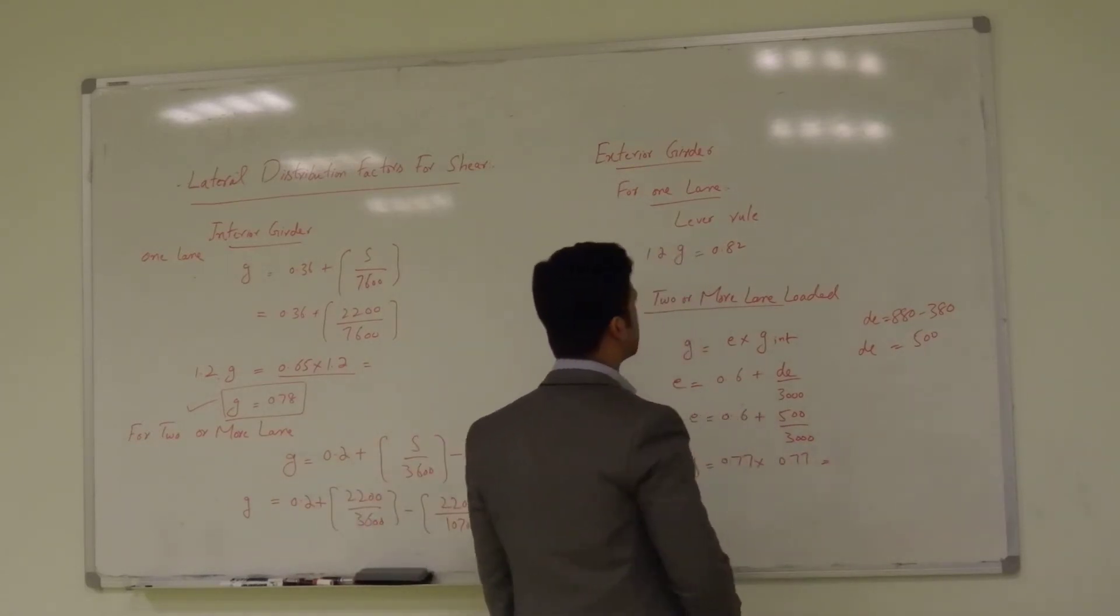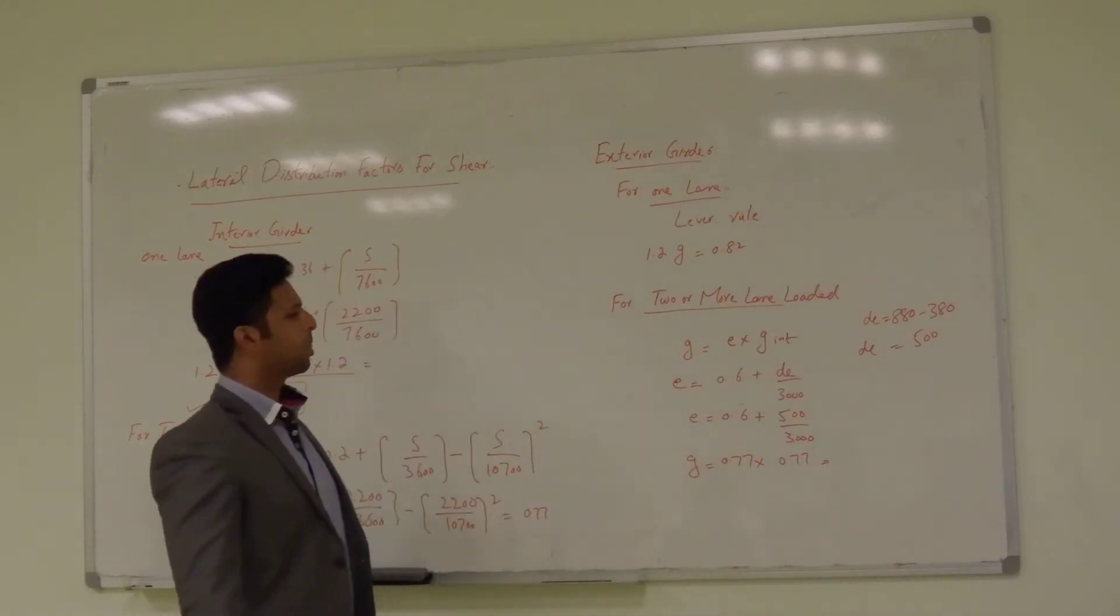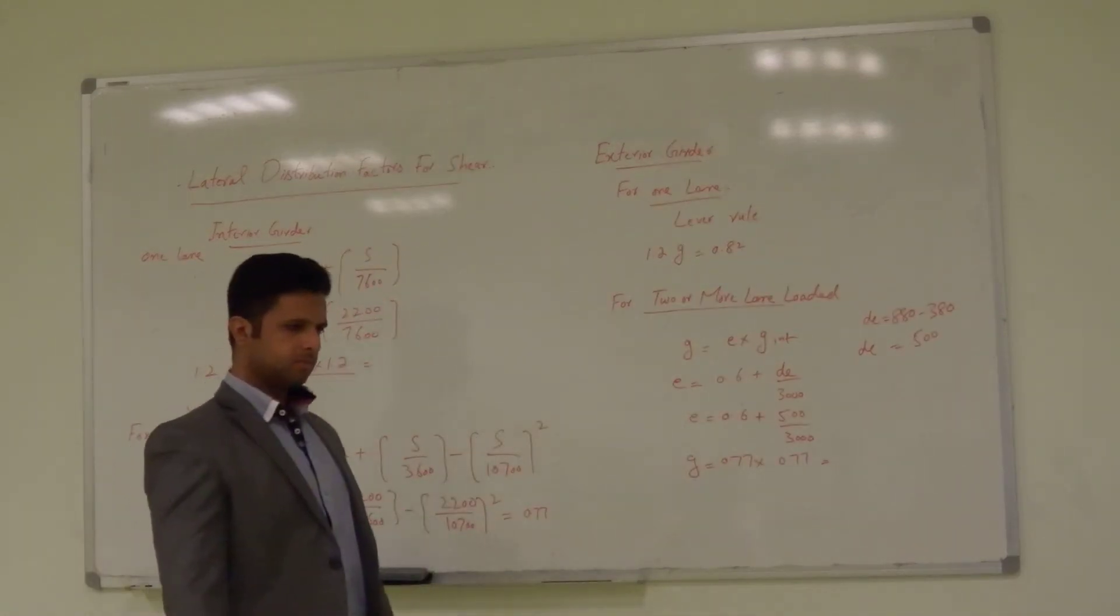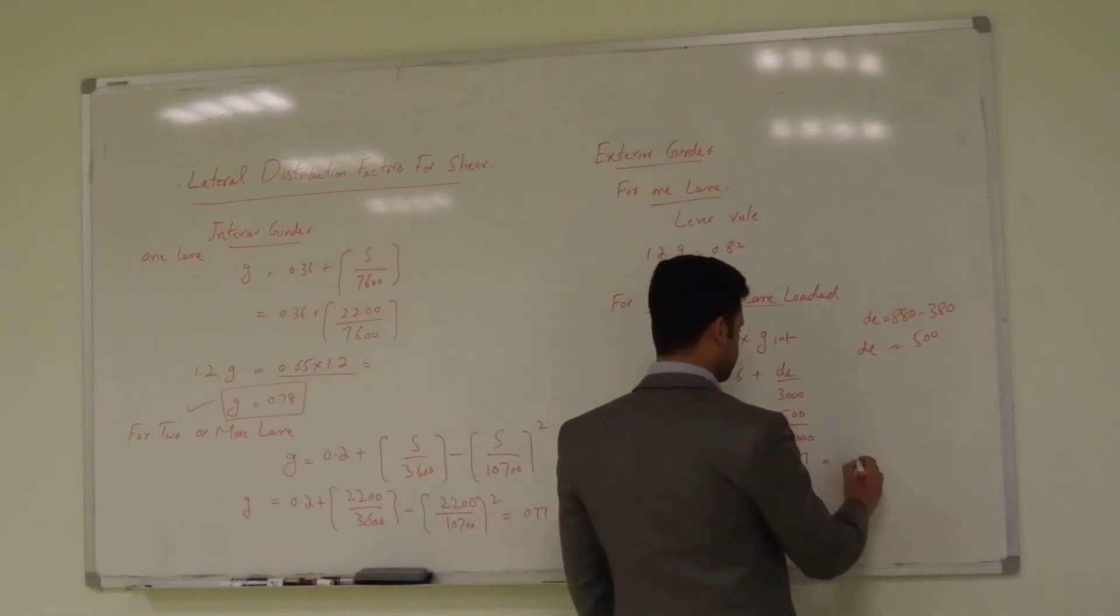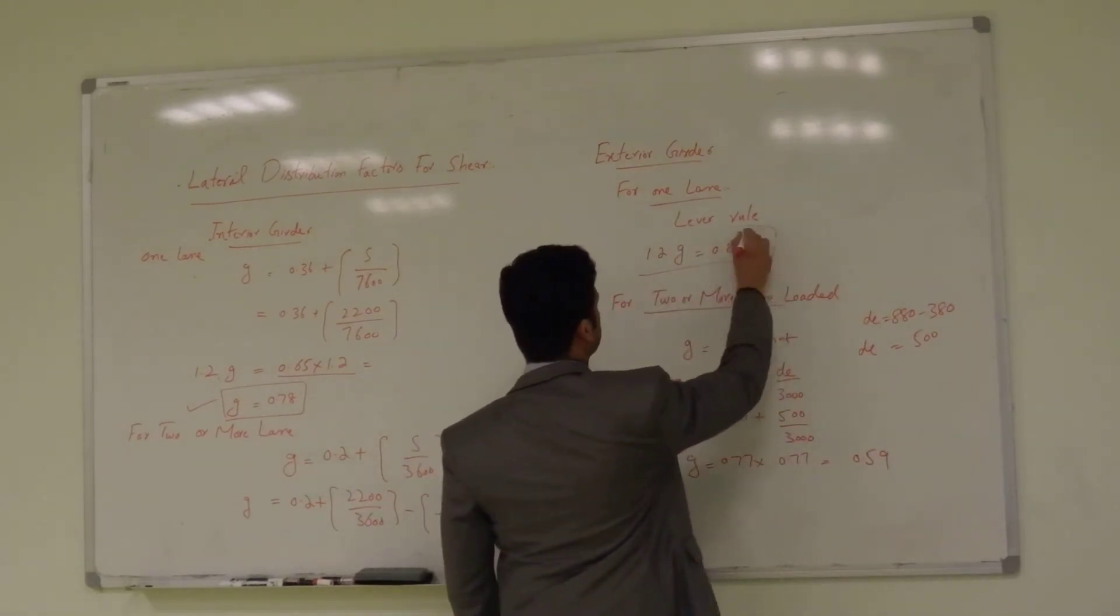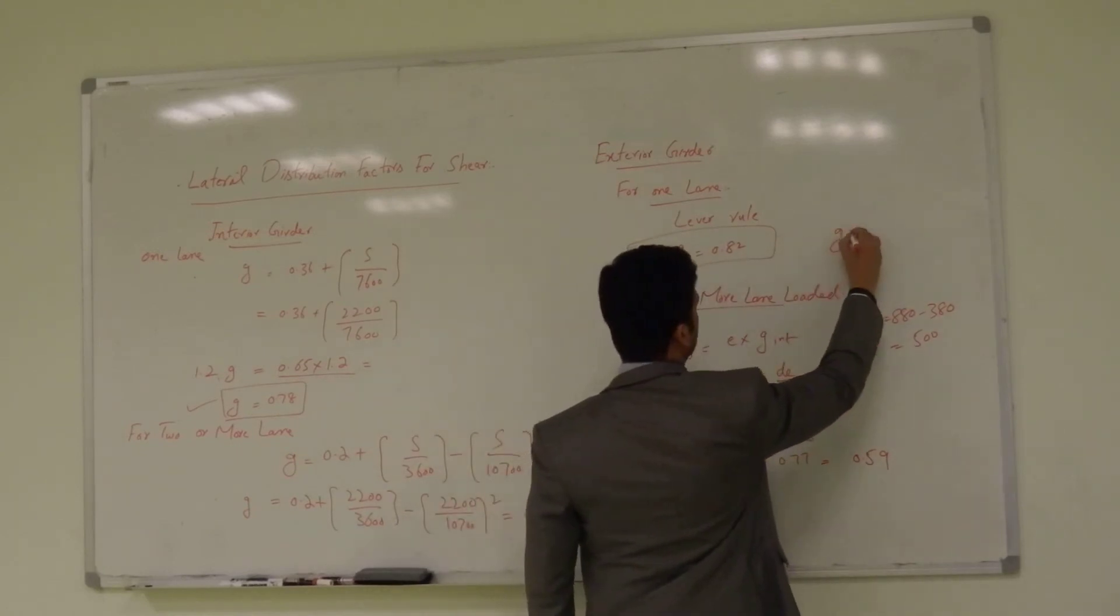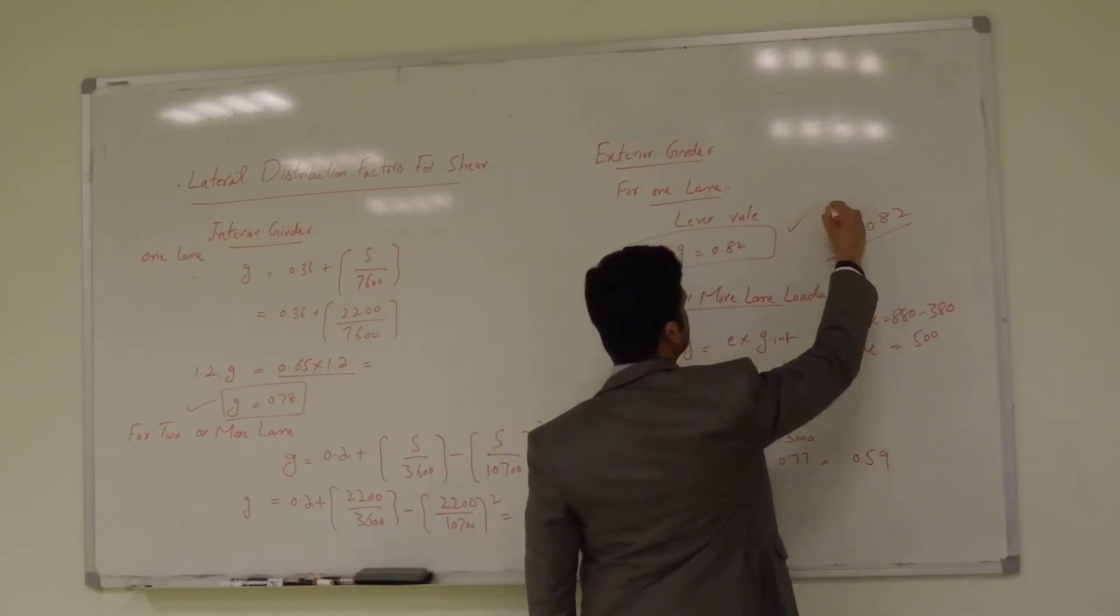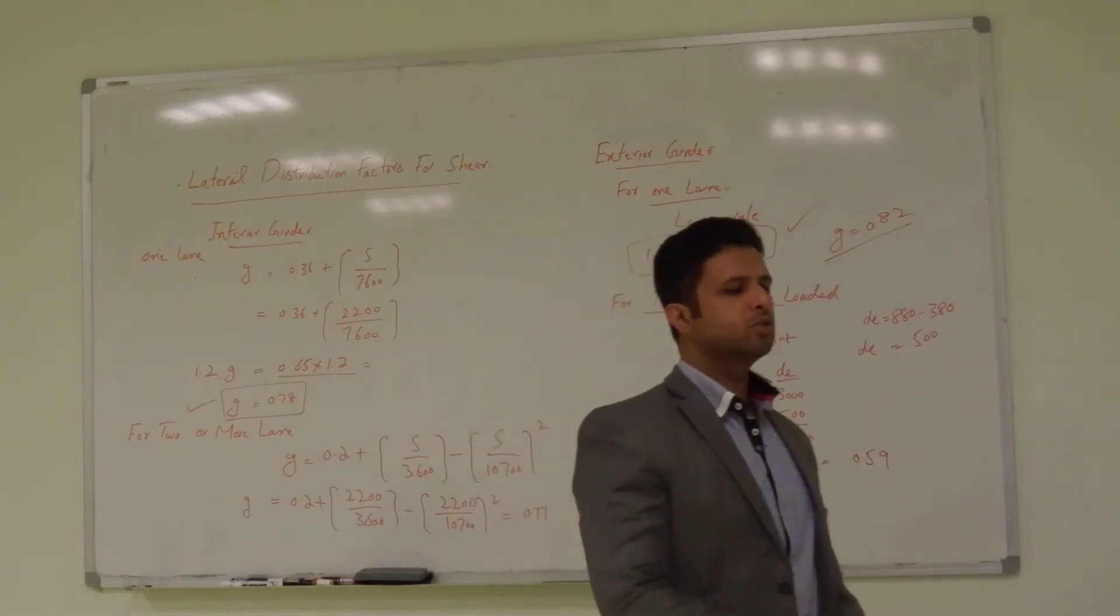And g interior for two lanes loaded, this value is 0.77. So, how much is g? 0.77. 0.59. So, we will use g is equal to 0.82.